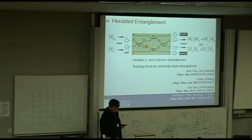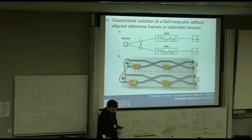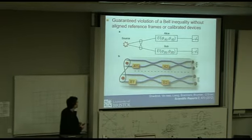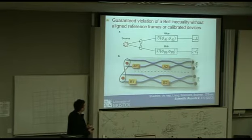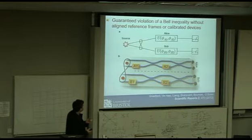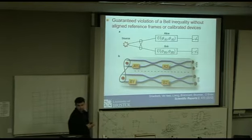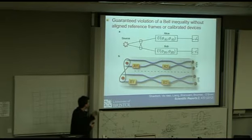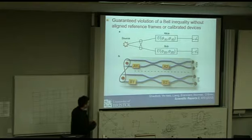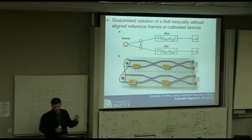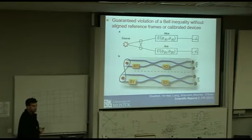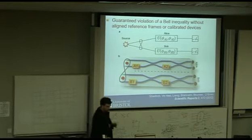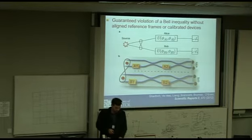We're also using these things for exploring very fundamental aspects of quantum physics. Here we've shown you can violate a Bell inequality even when there's no shared reference frame between Alice and Bob, and even if their devices are completely uncalibrated. This is a theoretical result we've implemented using the same sort of thing. It's a nice application in that it is quite a demanding task to calibrate this phase shift, and it turns out for this case you don't need to do it.